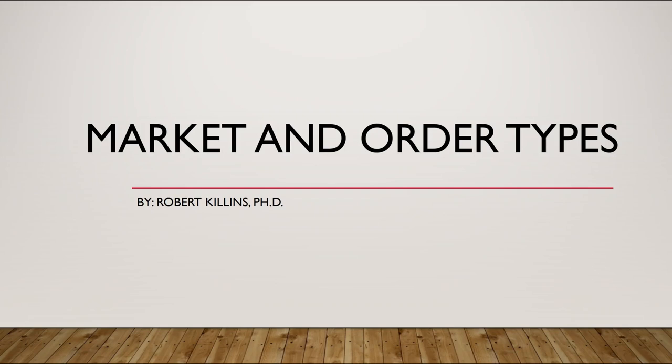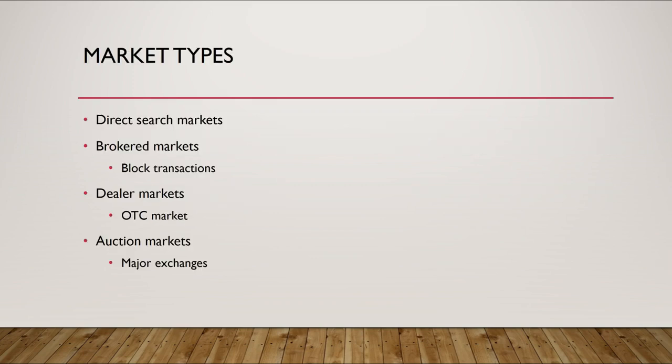Hello everybody, welcome. Today I'm going to walk you through a quick video where we're going to go over some different types of markets and order types within those markets. We're going to look at four different types of markets and five or six different types of orders. These are going to be orders that individuals give to their broker to execute a specific trade on a security trading on a market.